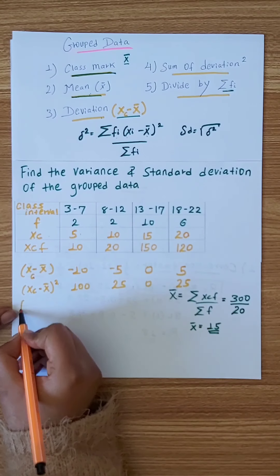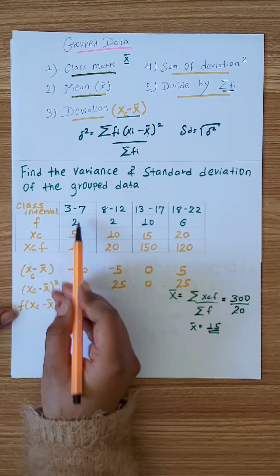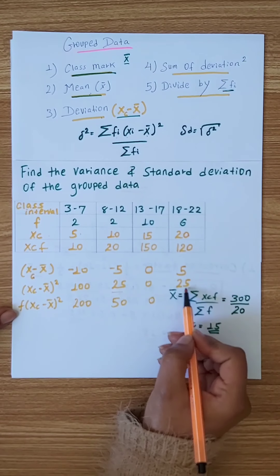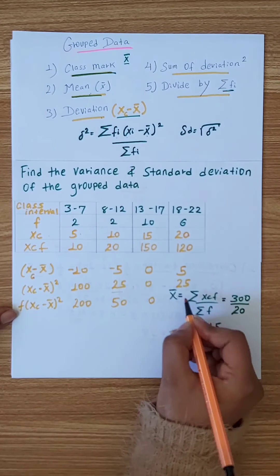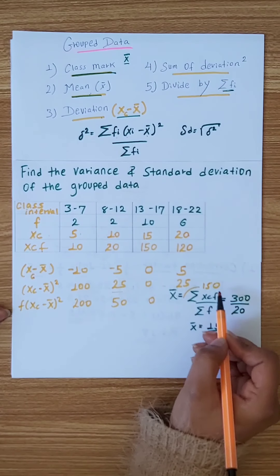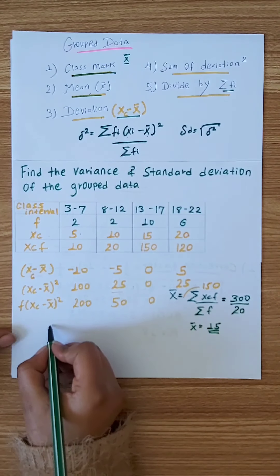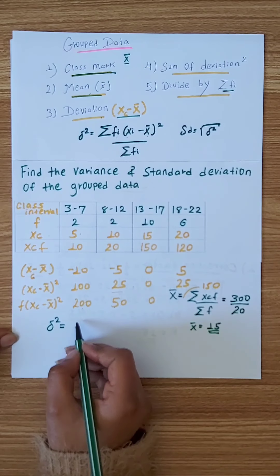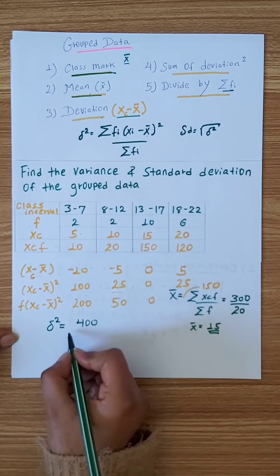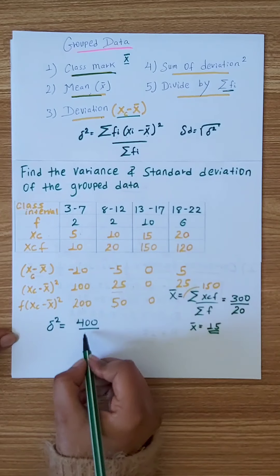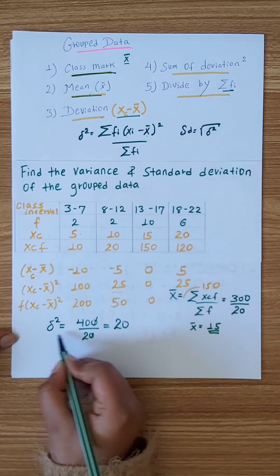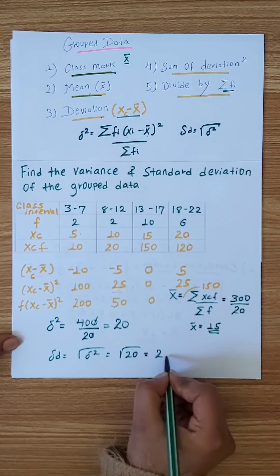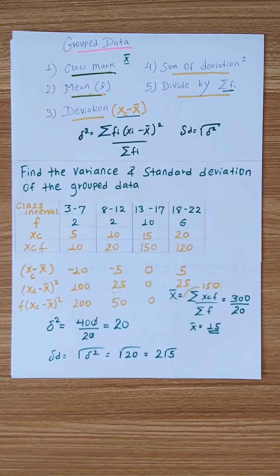This is the formula for the frequency times the square of the deviation. The frequency times the square of the deviation is equal to the sum of squared deviations. The variance is equal to the summation of frequency times squared deviation over the summation of frequency.